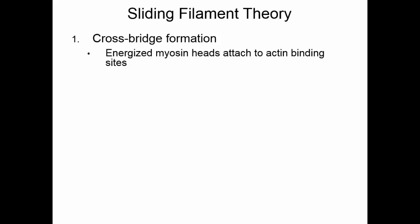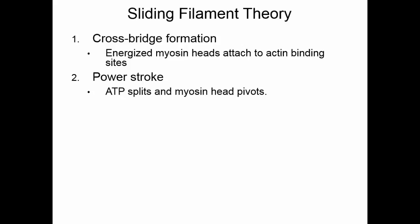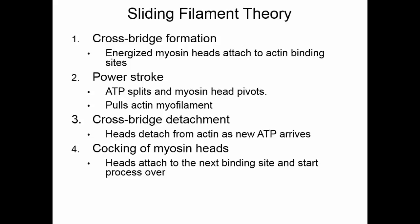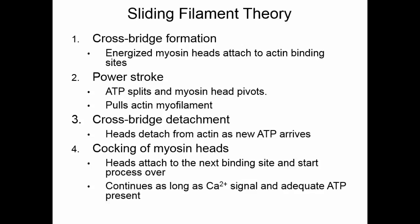Cross-bridge formation — that energized myosin head attaching to the actin binding site — is the beginning of the sliding of the filaments. The myosin head will undergo a power stroke. The ATP that was attached to the myosin split earlier, which cocked the myosin head into its ready position. When it attaches to actin, it power strokes, pulling the actin myofilament closer to the M-line, closer to the center of the sarcomere. Then cross-bridge detachment occurs — ATP must attach to the myosin head, re-cocking it, so the head can attach to the next available binding site on actin and slide the filament again.